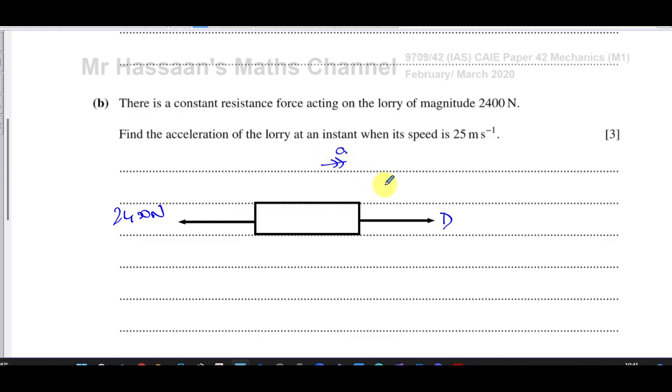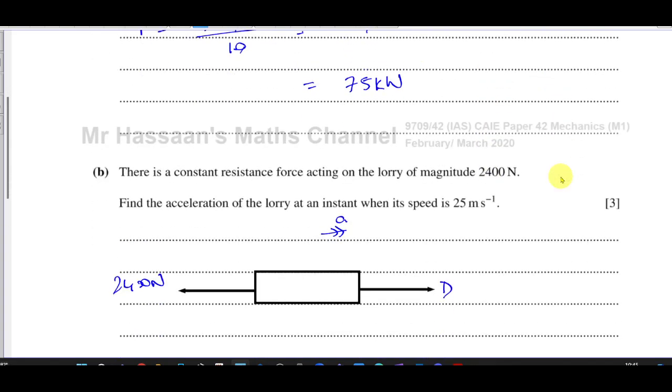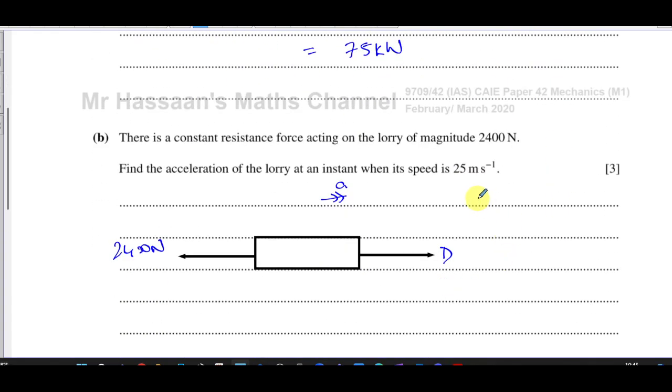And what we've got to do is we've got to work out that acceleration. Now, what we know from the previous part of the question is that the power is 75,000 watts. So the power is 75,000 watts. That's in the unit that we're going to use for calculations. So 75,000 watts is the power. How is the power related to the driving force? Well, we know that the power is equal to the force, the driving force times the velocity.